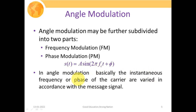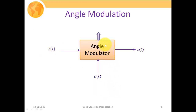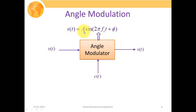In angle modulation, the instantaneous frequency or phase of the carrier is varied in accordance with the message signal — this is the key insight. This angle modulator block takes the message signal m(t) and the carrier signal c(t) as inputs, and at the output we receive ST = A sine(2π f_c t + φ), where the angle value is modified with respect to the message signal x(t).